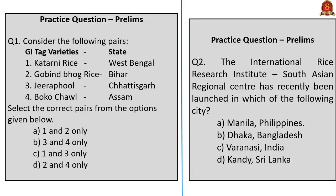From a prelims perspective, know about the cultivation parameters discussed, uses of rice crop, IRRI SARC, and GI tags recently awarded to rice varieties. For mains preparation, know the factors affecting rice prices. You can also use the statistics relevantly as per question requirements in General Studies Paper 3.